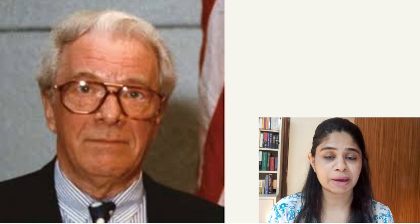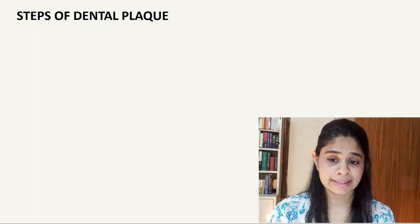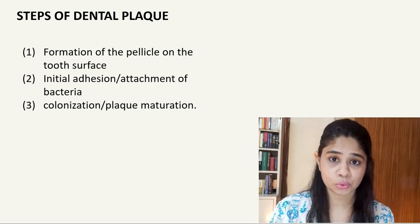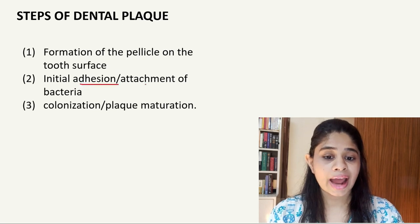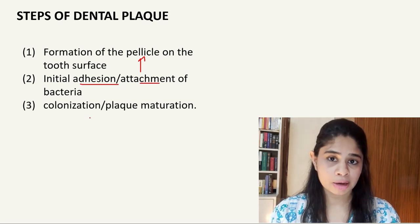We spoke about Lowe et al and his classical study on the experimental model of gingivitis, and through this experiment it was seen how dental plaque is so important for the initiation and progression of gingivitis. Now let's break down the steps of plaque formation into three major categories: formation of the pellicle on the tooth surface, initial adhesion and attachment of bacteria onto the pellicle, followed by colonization and plaque maturation.